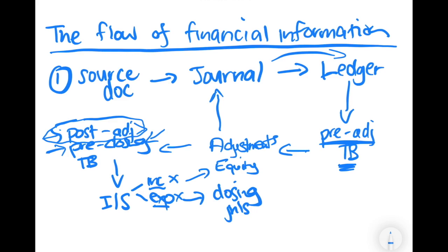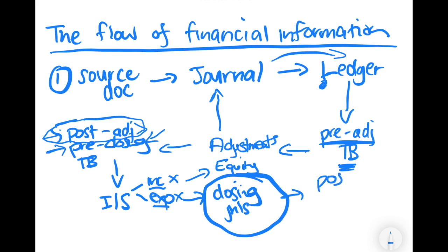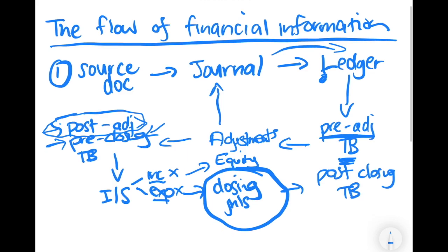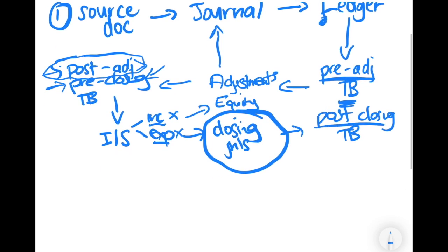Once we have our closing journal entries, we process them — they end up in the ledger again — and then we extract another trial balance called the post-closing trial balance. With the post-closing trial balance, the only things appearing here are our assets, equity, and liabilities. We don't have any income and expenses because those have already been closed off.